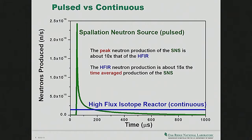If you can make use of this time structure in your experiment, you gain a lot. If you were to go to the reactor and have a shutter that opens and closes quickly, your little pulse would be 10 times weaker than what you have here at the SNS. But if you integrate the total number of neutrons, the reactor gives about 15 times more. So if your experiment doesn't make use of the pulse structure, you're much better off at the reactor. If you can use the pulse structure, do your experiment at the SNS — that's just the rule of thumb.